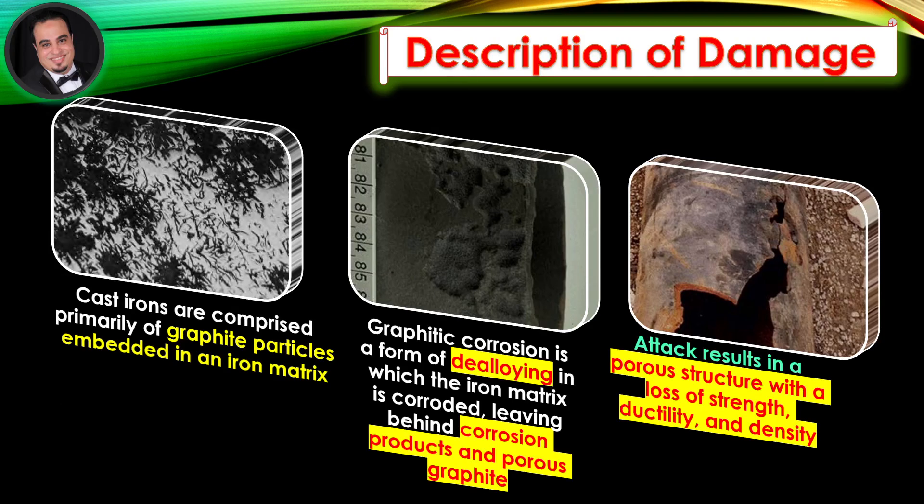Description of damage: Cast irons are comprised primarily of graphite particles embedded in an iron matrix. Graphitic corrosion is a form of dealloying in which the iron matrix is corroded, leaving behind corrosion products and porous graphite. Attack results in a porous structure with a loss of strength, ductility, and density.